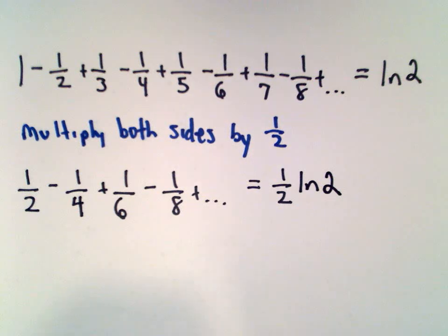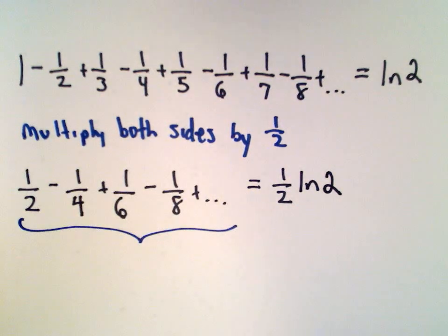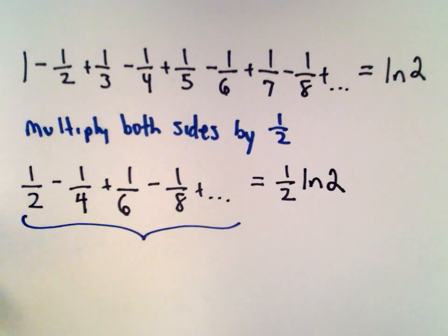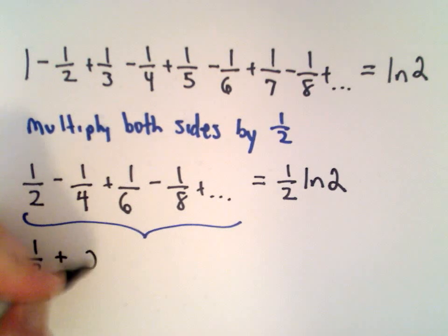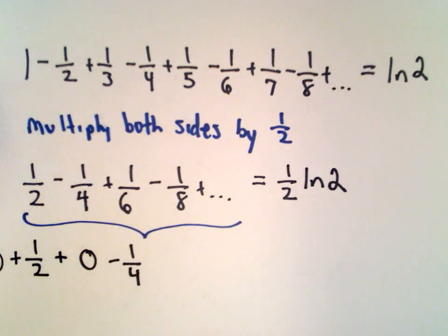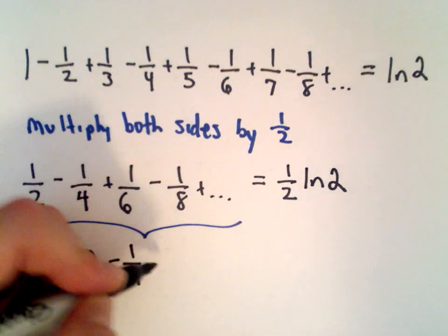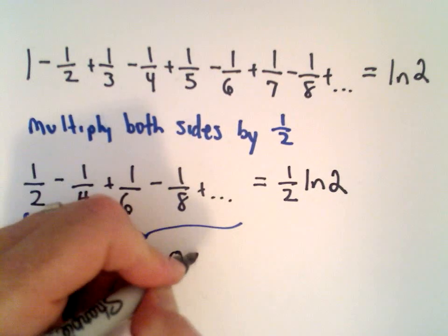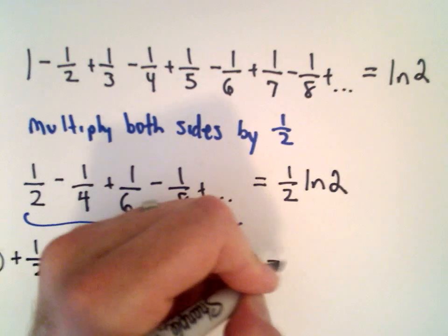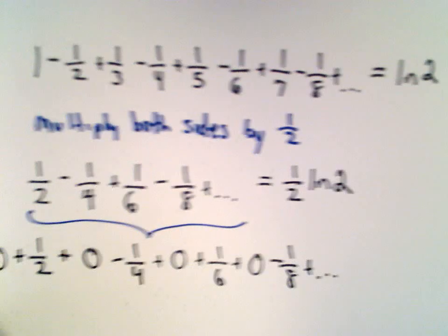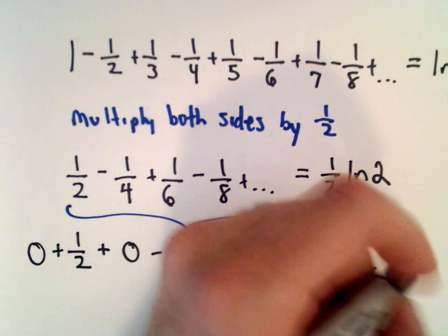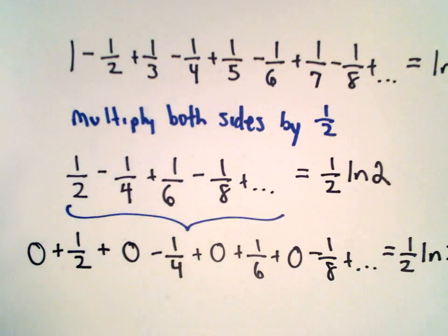Now what I'm going to do to this series we just produced is insert some zeros. I'm going to insert a zero at the beginning, then plus one half, then insert another zero, then minus one fourth — just inserting zeros in between each term. So plus zero, plus one sixth, plus zero, minus one eighth, plus dot dot dot. All I'm doing is throwing in some zeros, so that's not going to change its value. We've still got one half times the natural logarithm of two.